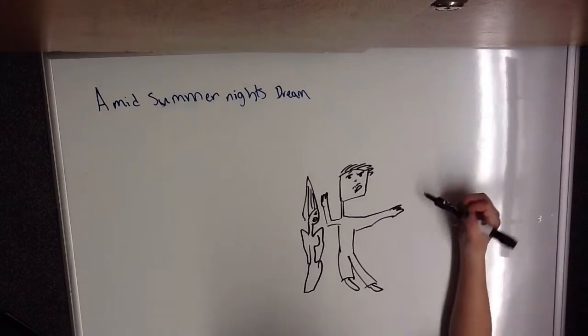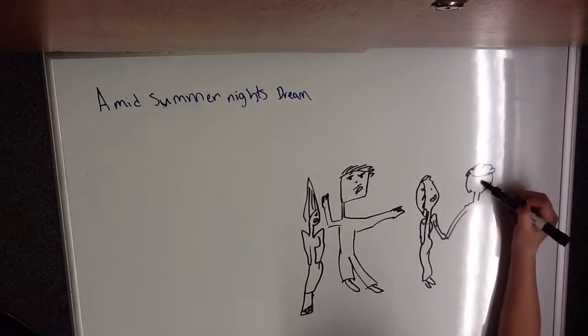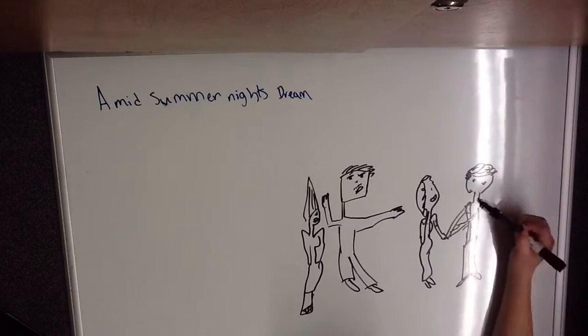Hermia and Lysander were madly in love, but Helena and Demetrius once loved each other. But then Demetrius dumped Helena, and she forever loved him still. But he didn't.